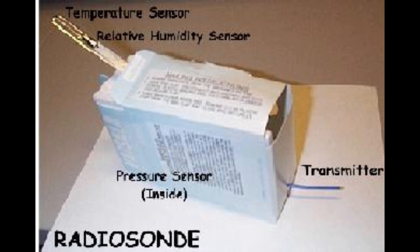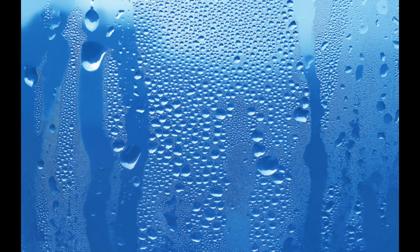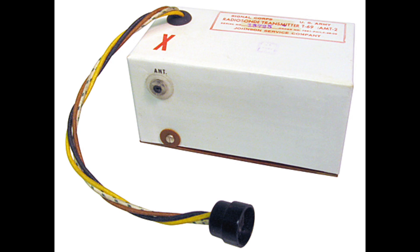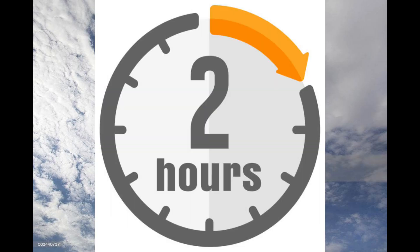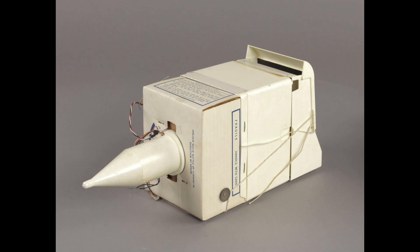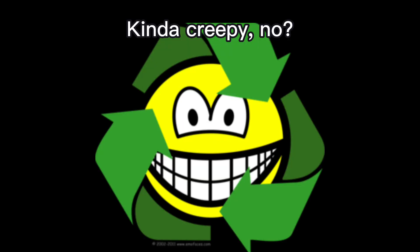The radiosonde can collect data like temperature, air pressure, and humidity. With the help of GPS, it can also collect data about wind direction and speed. A transmitter on the radiosonde transmits all of this data back to the ground in real time. The weather balloon can travel for up to 2 hours, reaching heights of up to 115,000 feet before it finally bursts. As the radiosonde falls back to the ground, a small parachute slows its descent to prevent danger to life and property, also making them reusable.